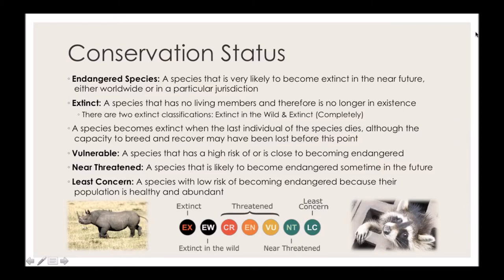If a species is endangered and the situation keeps getting worse, they'll become extinct, meaning they have no living members and are no longer in existence. There are two ways an animal can be extinct: extinct in the wild — a very small number left in captivity — or plain extinct, with no living members at all. A species is known as extinct when the last individual dies, although the capacity to breed may have been lost long before that point. If two living members are both the same sex, the capacity to breed isn't there, so in effect that species is already extinct.